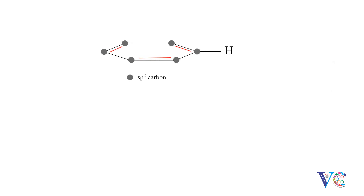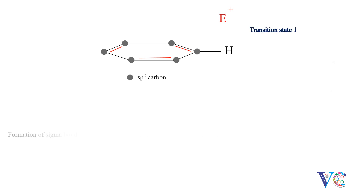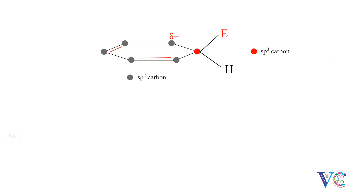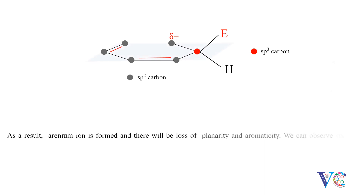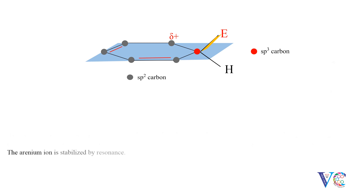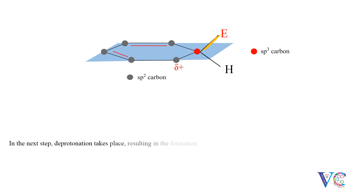The planar benzene molecule reacts with the electrophile. Attack of two pi electrons of one of the pi bonds of benzene on the electrophile results in the formation of a sigma bond between one of the sp2 hybridized carbons of benzene and the electrophile. As a result, an arenium ion is formed, and there will be loss of planarity and aromaticity. We can observe the six-membered ring in one plane, and the electrophile bonded to one of the carbon atoms of the ring in another plane. The arenium ion is stabilized by resonance. In the next step, deprotonation takes place, resulting in the formation of planar electrophilically substituted benzene.